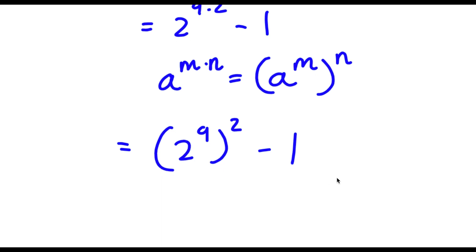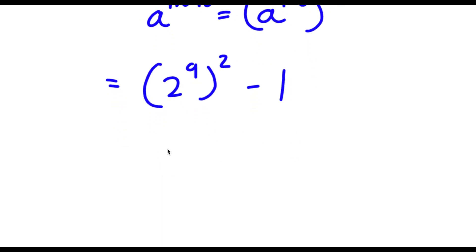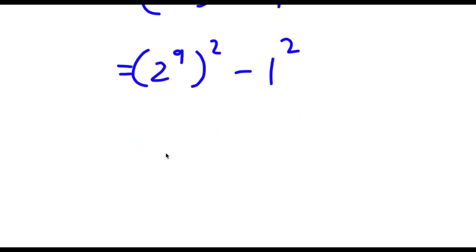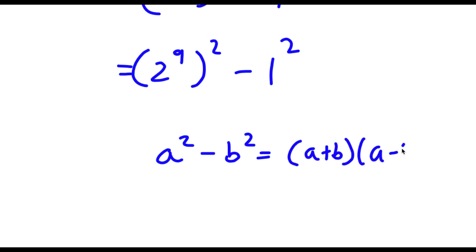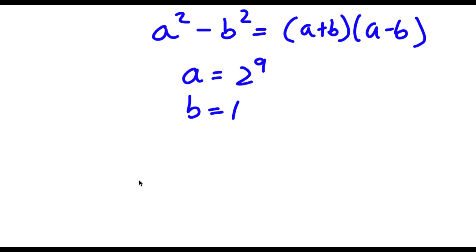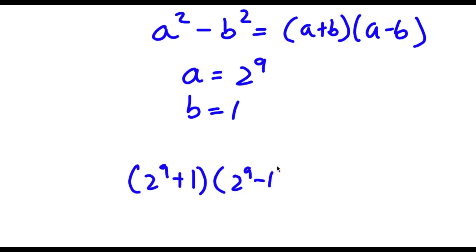So now 1 here is going to be the same thing as 1 squared. So now I have 2 to the power of 9, all squared, minus 1 squared. And now if I have something in the form a squared minus b squared, this is equal to (a plus b) times (a minus b). So in this case a is equal to 2 to the power of 9 and b is equal to 1. So now I have (2 to the power of 9 plus 1) times (2 to the power of 9 minus 1).